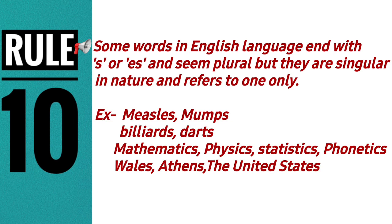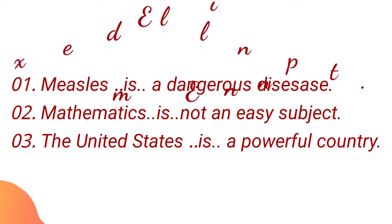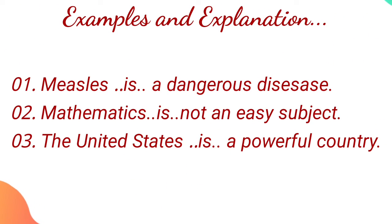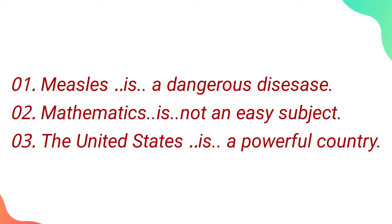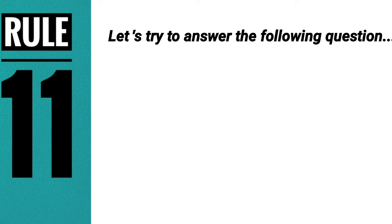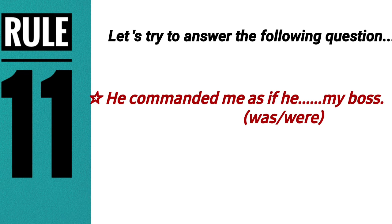The tenth rule: some words in English end with 's' or 'ics' and seem plural but are singular in nature and refer to only one thing — like measles, mumps, rickets, darts, mathematics, physics, statistics, phonetics, Wells, Athens, and United States. For example: 'Measles is a dangerous disease,' 'Mathematics is not an easy subject,' 'United States is a powerful country.'